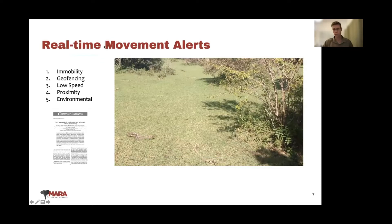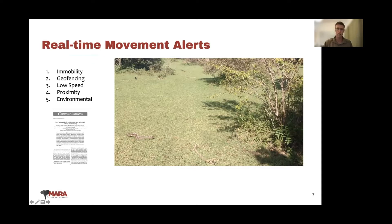We can also use the data for real-time alerting — looking at an elephant that has stopped moving, elephants crossing virtual barriers or geofences, elephants that slow down statistically over the course of movement which might indicate injury or disease, elephants getting close to other landscape features, and in real-time looking at elephants as they move through their habitat and get into conditions of concern, such as areas of high human settlement.